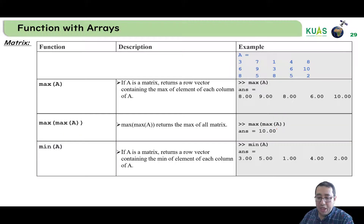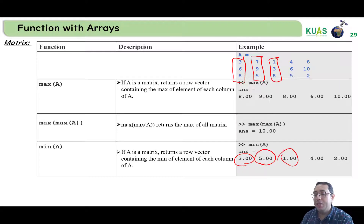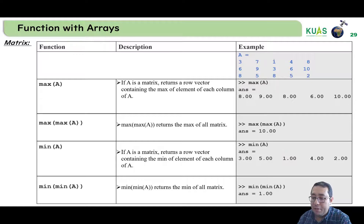If we write min(A) and A is a matrix, it will compute the minimum number for each column. For example, from 3, 6, 8 the minimum is 3; from 7, 9, 5 it will be 5; from 1, 3, 8 it will be 1, and so on. If we need the minimum for the whole matrix, we write min(min(A)), and the minimum number of all elements here is 1.